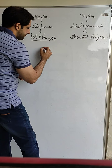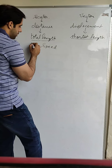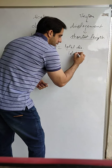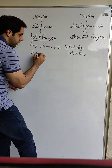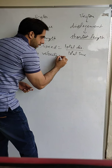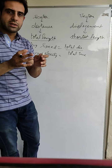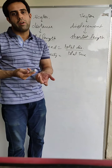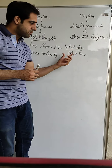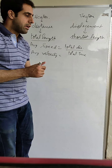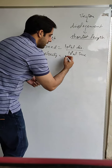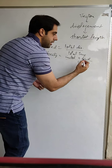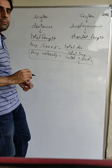Yesterday we compared speed and velocity. The formula for average speed is total distance divided by total time. Similarly, for average velocity — since velocity is a vector quantity, its direction and value will change. So we do not simply take total displacement over total time. Instead, we take the initial velocity and the final velocity and find their average. So average velocity equals initial velocity plus final velocity divided by 2.